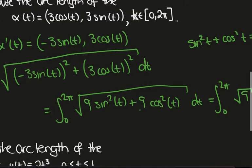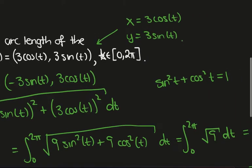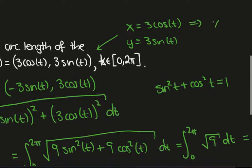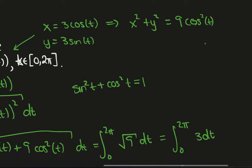Now we actually didn't need to do this computation if we realized what this curve was parametrizing. We can see that if we set x equal to 3cos(t) and y equal to 3sin(t), then what we end up with is x² plus y² equals 9cos²(t) plus 9sin²(t).